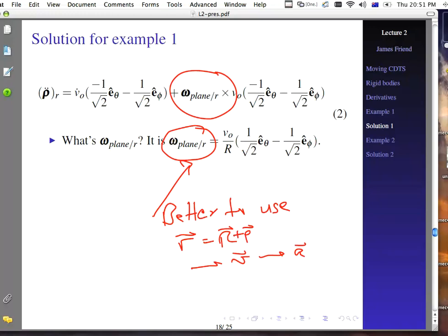So we were talking about the solution for example 1, and that it's better really to use the position vector, cap r plus rho, than take the time derivative to get the velocity vector and the time derivative to get the acceleration vector. Otherwise, you end up with difficulties in trying to figure out what things like this item are.